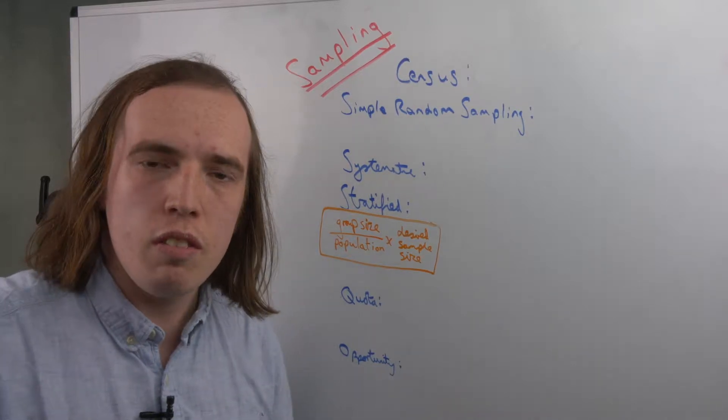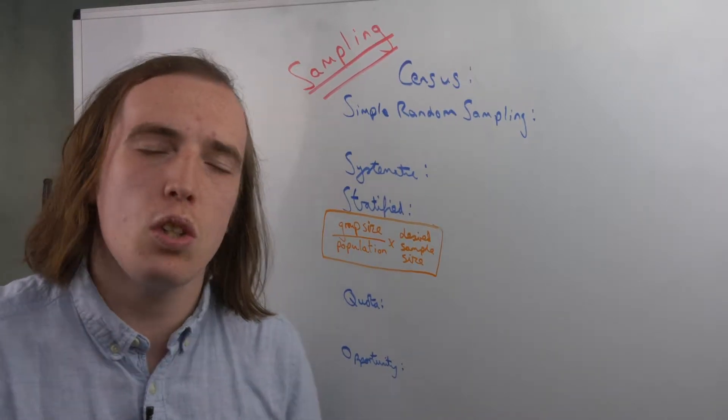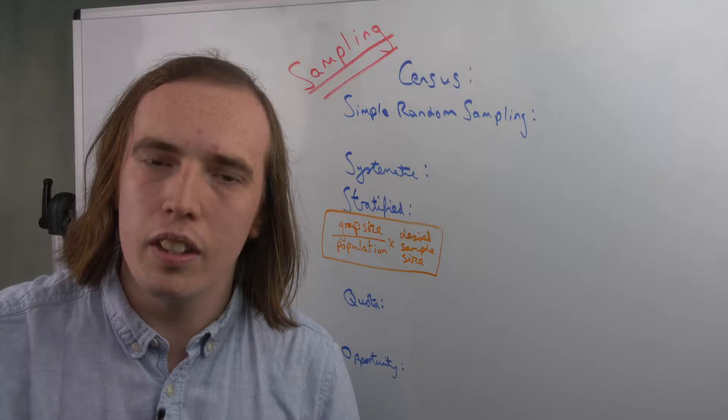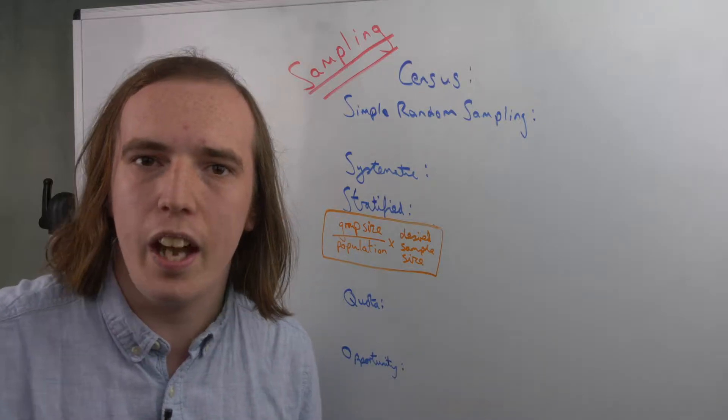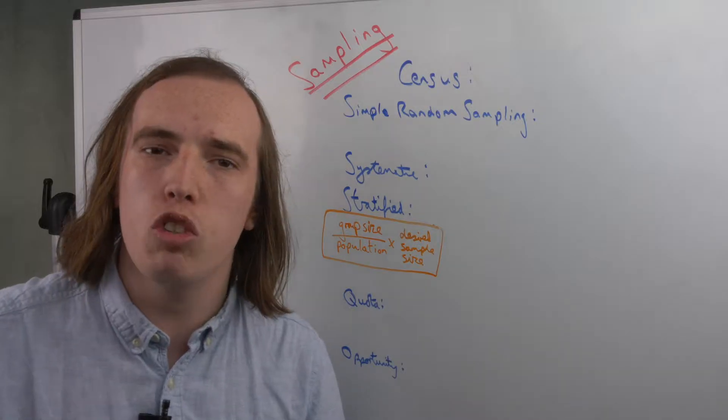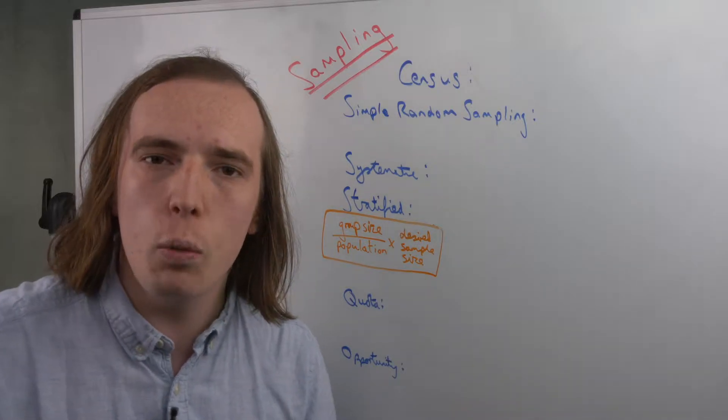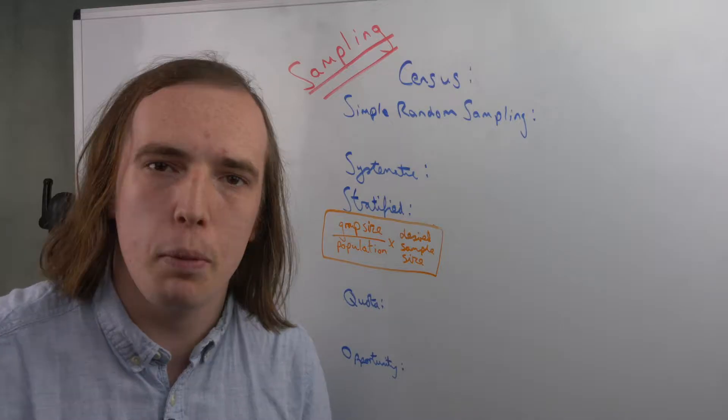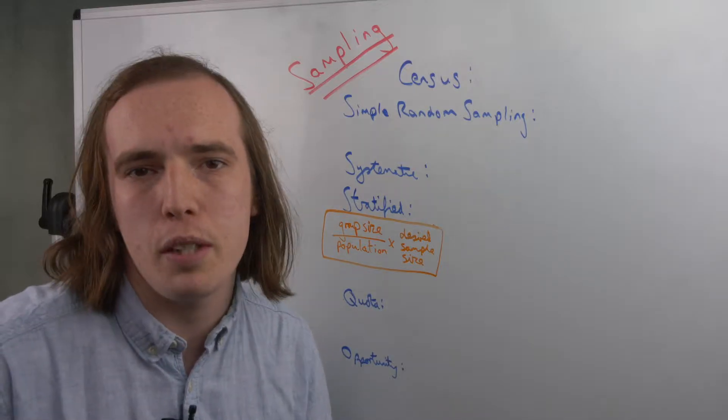Within statistics, the first thing you might come across is a topic called sampling. If statistics is looking at how data based on people or things can be used to work out trends or probabilities, we need to get this data in the first place, and that's where sampling comes in.